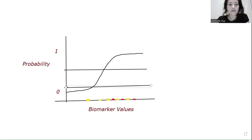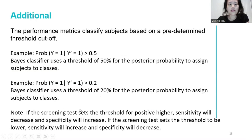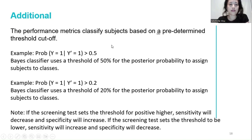The observation is that if the screening test sets the threshold for positive higher, sensitivity will decrease and specificity will increase. If the screening test sets the threshold to be lower, sensitivity will increase and specificity will decrease.